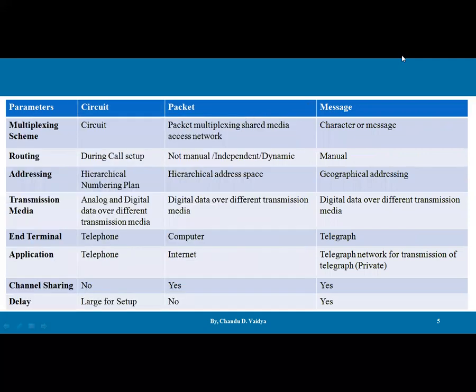Multiplexing scheme: in circuit switching, circuit multiplexing is used. In packet switching, packet multiplexing with shared media access network is used. In message switching, character or message switching is used. Routing: in circuit switching, routing is done during the call setup. In packet switching, it is independent or dynamic — routing can be dynamic. In message switching, routing is manual.